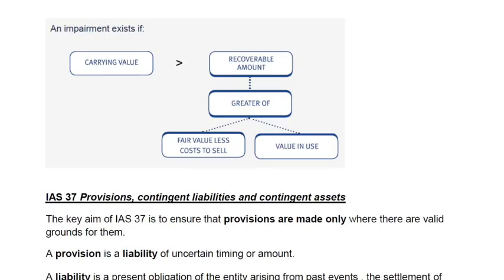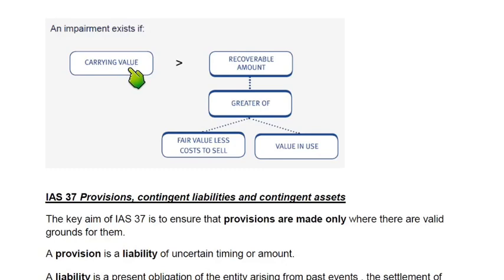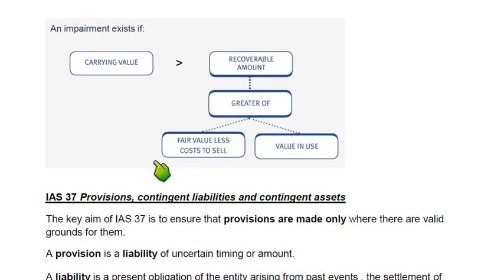Impairment loss can be understood with the help of a simple flowchart. There are two values: first, the carrying value, and second, the recoverable amount. Carrying value means net book value — that is, cost minus accumulated depreciation. The carrying value is then compared with the recoverable amount, which is the amount that could be recovered from the use or the sale of the asset. Recoverable amount is the greater of two values: fair value less cost to sell, or value in use.